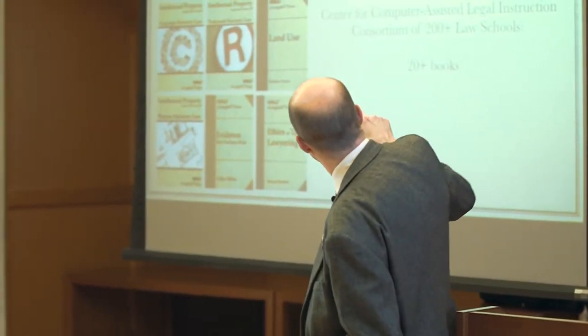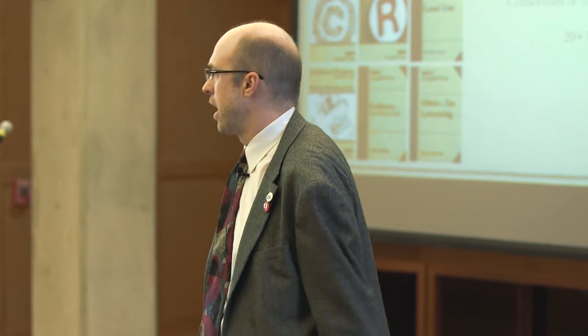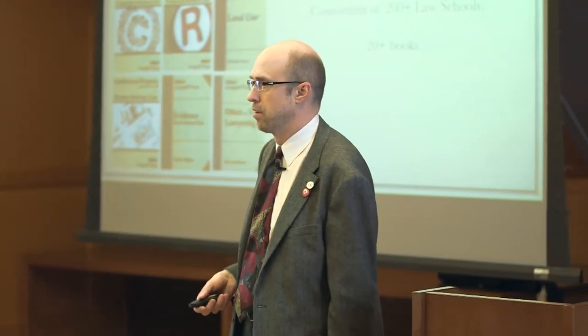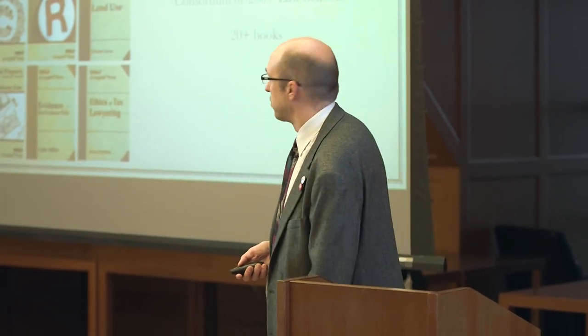Here's CALI — the Computer Assisted Legal Instruction. This is a consortium of over 200 law schools, centered at Cornell. We have about 25 legal books from them in our library that they update every year, because of course the law changes every year. They do it as a collaborative and then they all benefit from it — it makes perfect sense. They are all licensed CC BY.